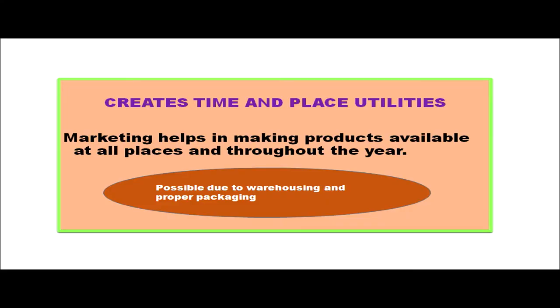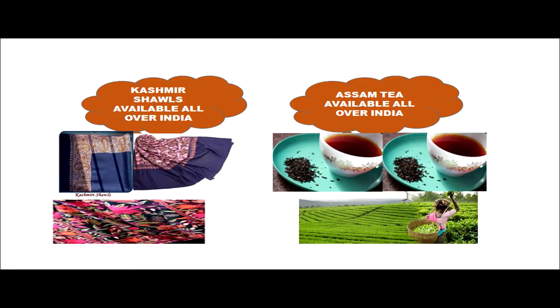Marketing creates time and place utilities by making products available at all places and throughout the year. Products are produced in different places but the demand is elsewhere; this is made possible through warehousing and proper packaging. For example, Kashmir shawls are available in other parts of India through transportation and storage, and tea grown in Assam is available all over India and even exported.